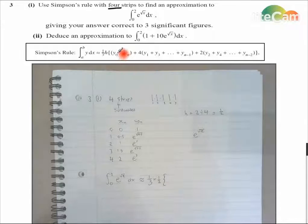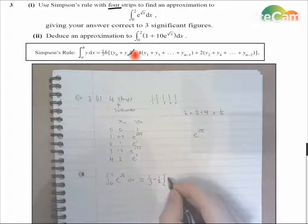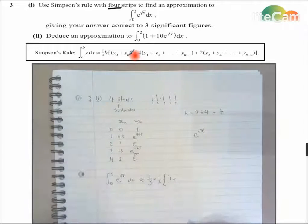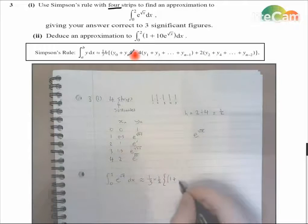And then we'll open a bracket. We've got the end points, so y0 and y4 for us. So y0 is 1, and y4 is e squared. Sorry, that's not e squared, that's e root 2. Apologize for that mistake. So e root 2.